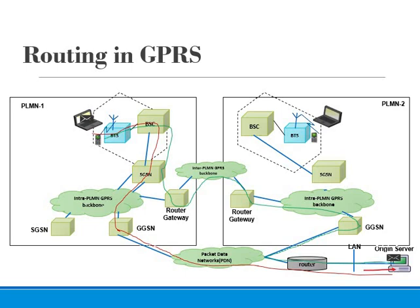The correspondent host is now sending the IP packet to the mobile station. The packets are routed on the IP network to the GGSN in PLMN 2. The GGSN queries the HLR and obtains the information that the MS is currently located in PLMN 1. It encapsulates the incoming IP packet and tunnels it through the inter-PLMN GPRS backbone to the appropriate SGSN in PLMN 1, which then de-encapsulates the packet and delivers it to the MS.